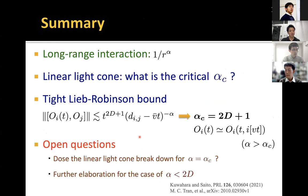To summarize: we consider long-range interacting systems with power-law decay exponent alpha and consider the linear light cone problem, which characterizes the critical alpha_c to ensure the linear light cone. We give the general answer and prove that the critical exponent is 2d plus 1, above which the Lieb-Robinson bound is given by this form, and this bound is tight up to some coefficient. The open questions are: first, if alpha is just above the critical value, can we obtain the linear light cone? Second, further elaboration of the Lieb-Robinson bound in the regime of alpha smaller than 2d. That's all of my presentation. Thank you for listening.